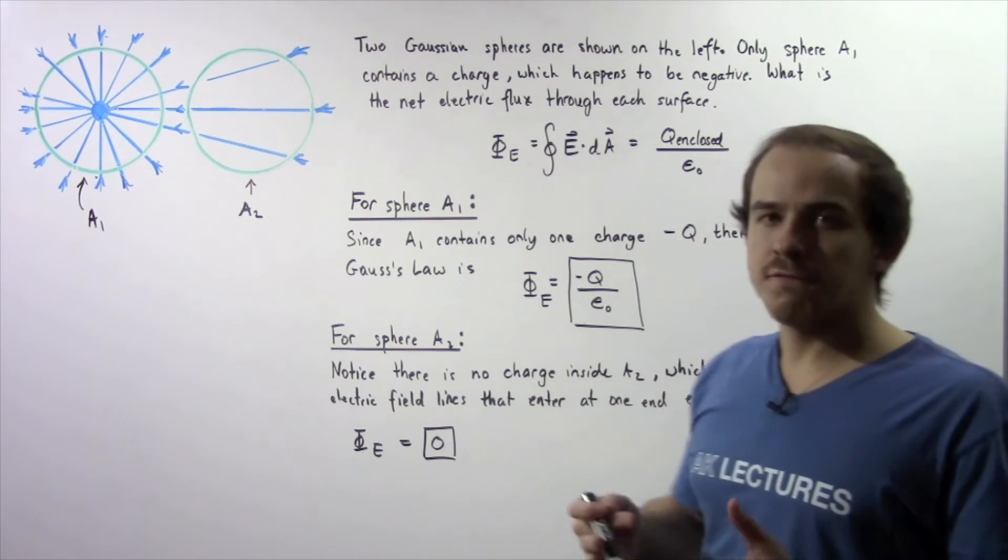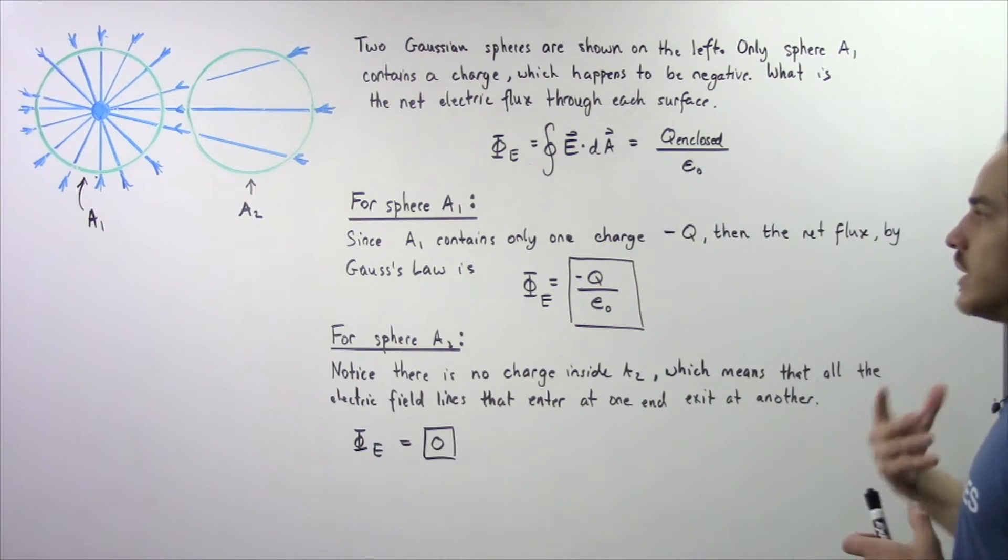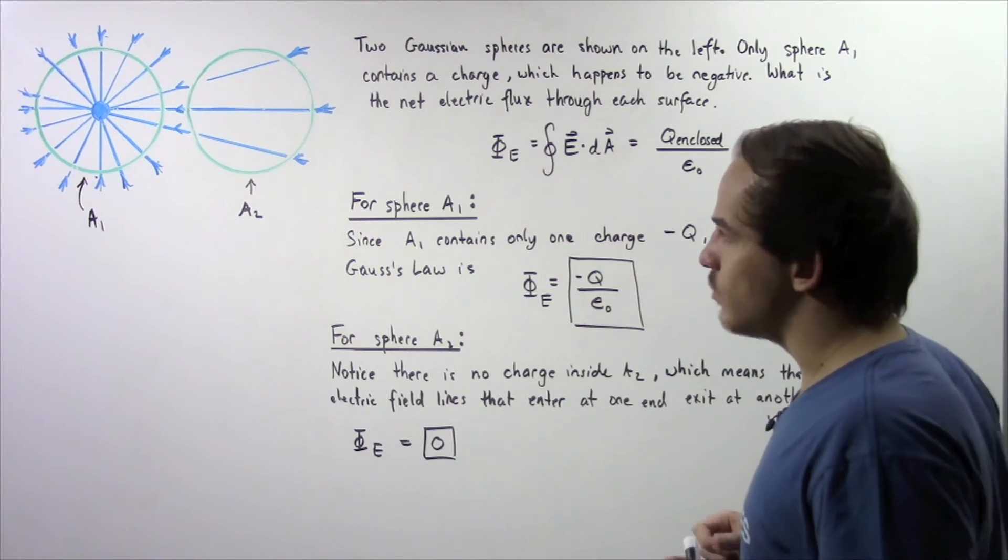Our permittivity of free space, which is a constant. So, let's begin with sphere A1.